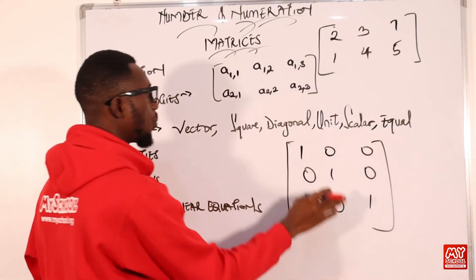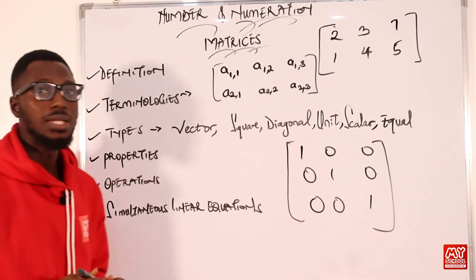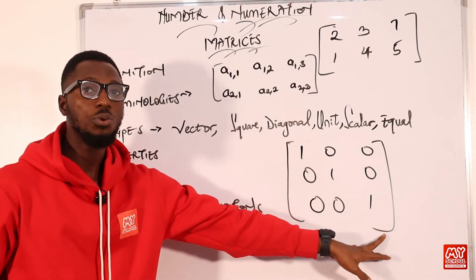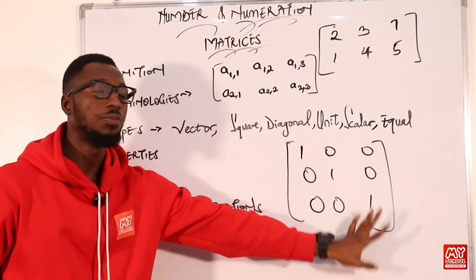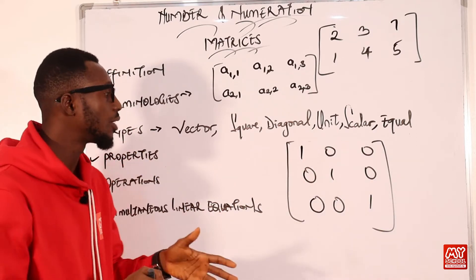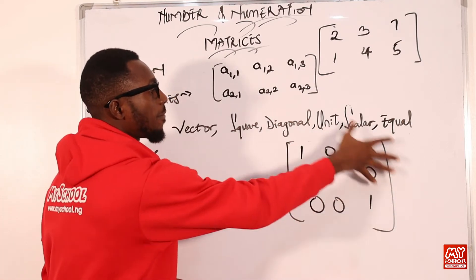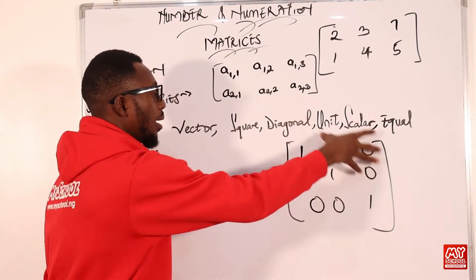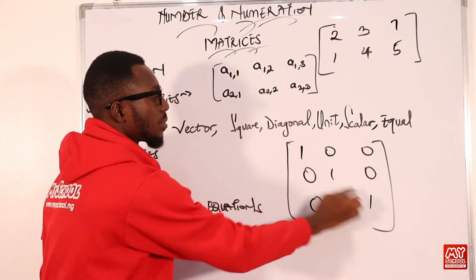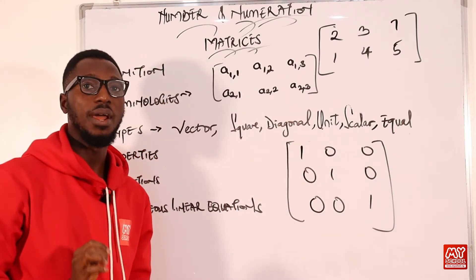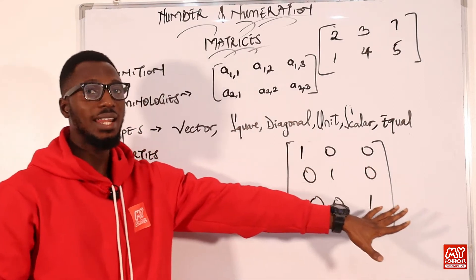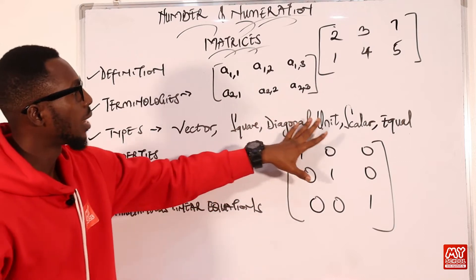We can see that the principal diagonal is filled with non-zero values. A diagonal matrix is one where every other spot in the matrix is filled with zero except the principal diagonal, which holds non-zero values. That's for a diagonal matrix — just like the name implies: diagonal.